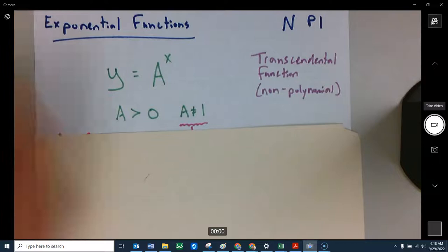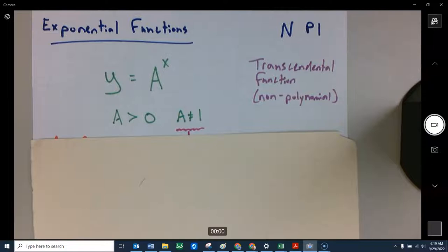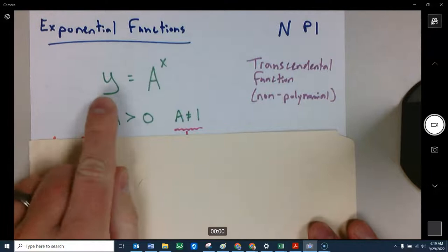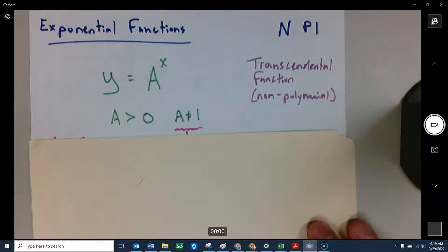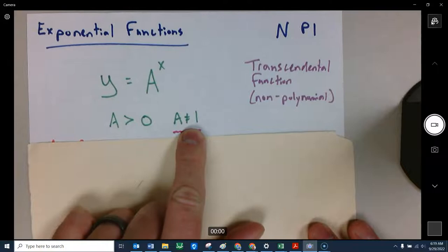So here is an exponential function. We call exponential functions transcendental functions. Transcendental meaning not a polynomial. We have this exponential function which says the output is equal to some number raised to the x power. That number has to be bigger than zero, so we're not talking negative numbers. But if it's a number bigger than zero, not one, it's called exponential.